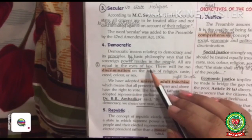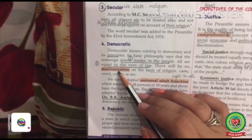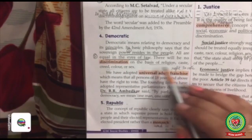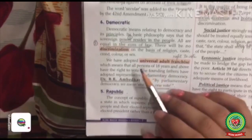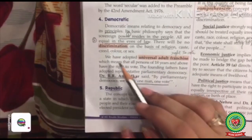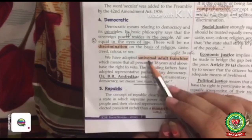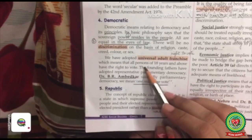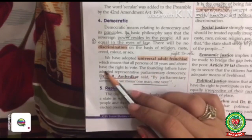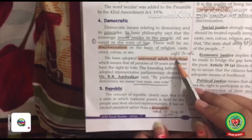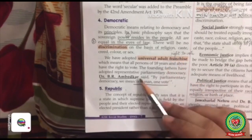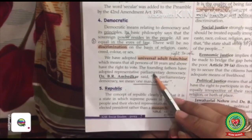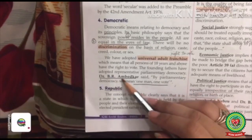The basic principles are: number one, the whole power resides in the people; number two, all are equal in the eyes of law — there will be no difference on the basis of religion, caste, creed, or color. In this democratic country we have adopted universal adult franchise, which means all persons of 18 years and above have the right to vote. Franchise means the right to vote.